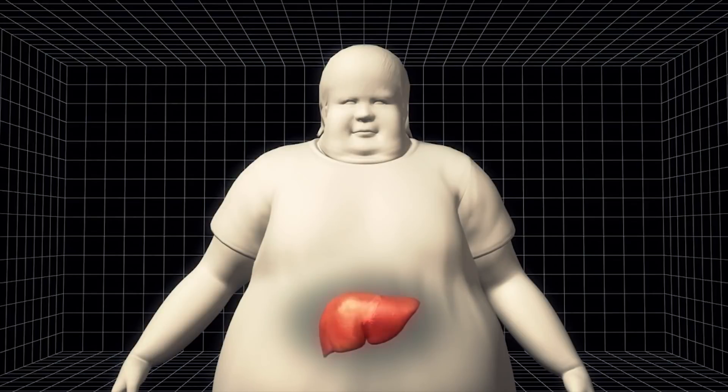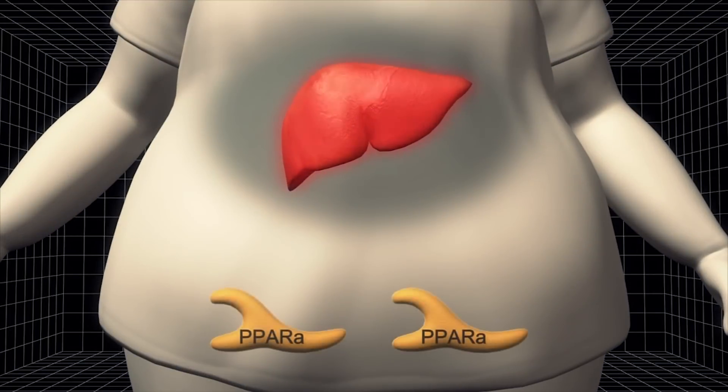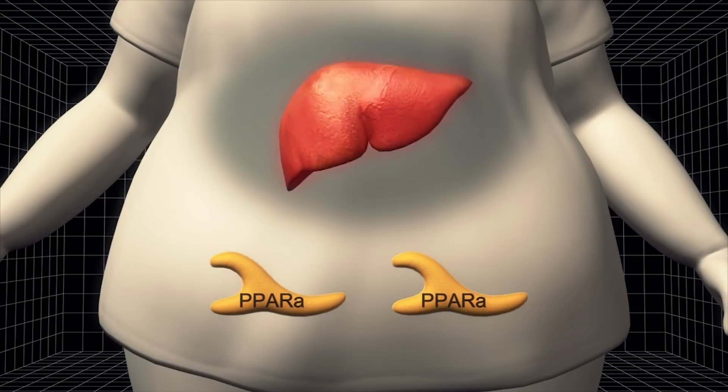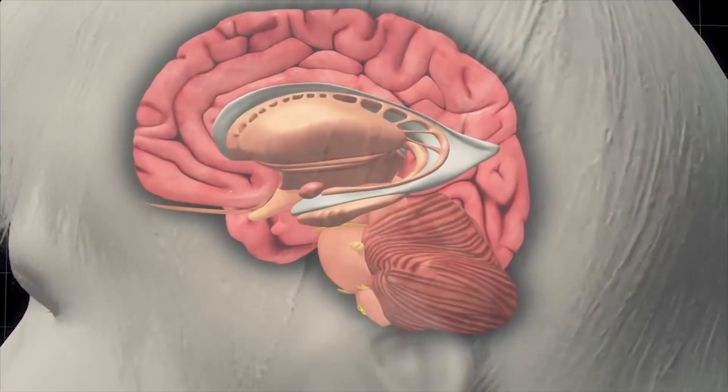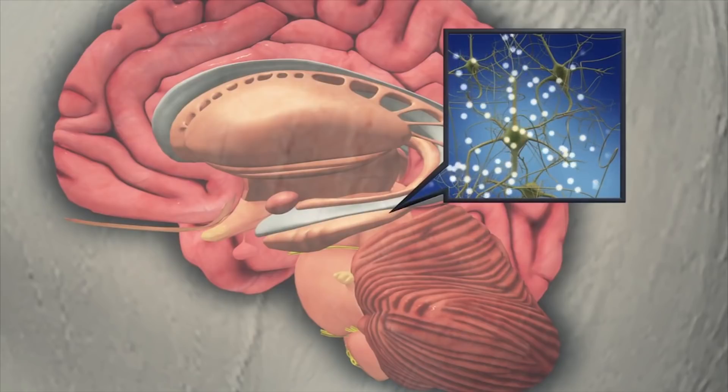The PPAR-alpha protein activates a machinery that processes fat in the liver. A high-fat liver quickly depletes its store of PPAR-alpha and draws from other sources in the body, including the hippocampus, where PPAR-alpha plays a big role in learning processes.